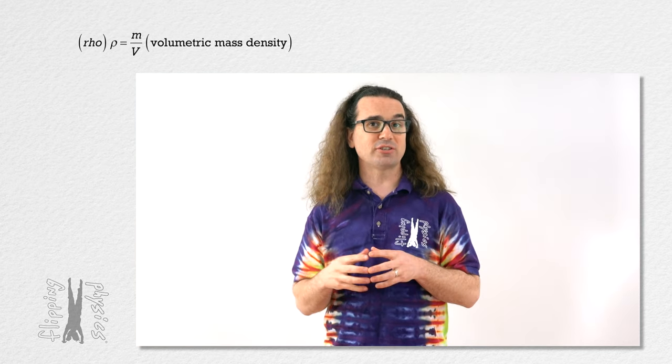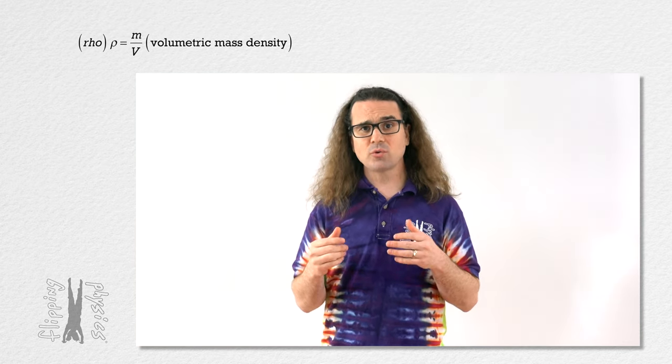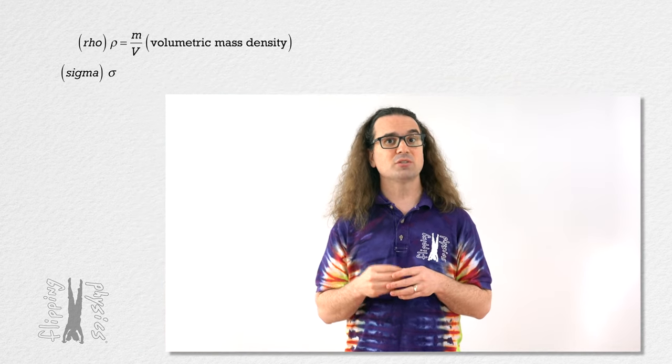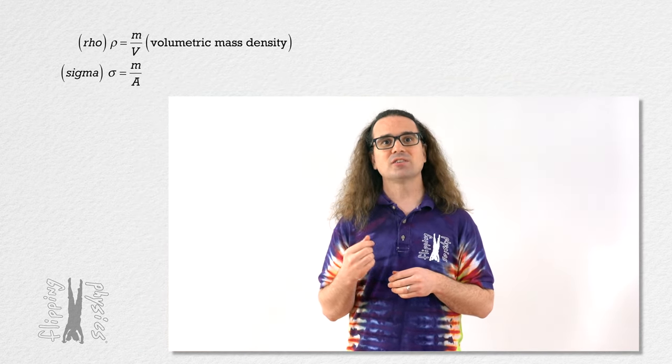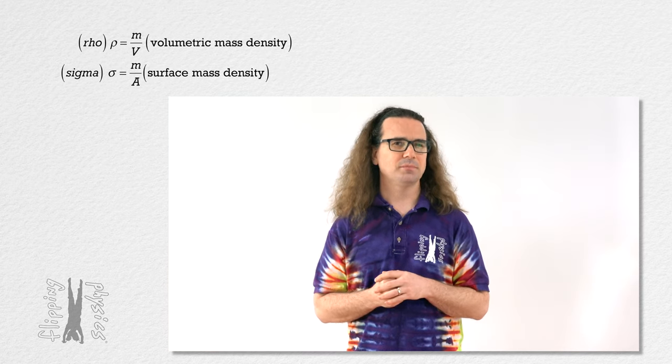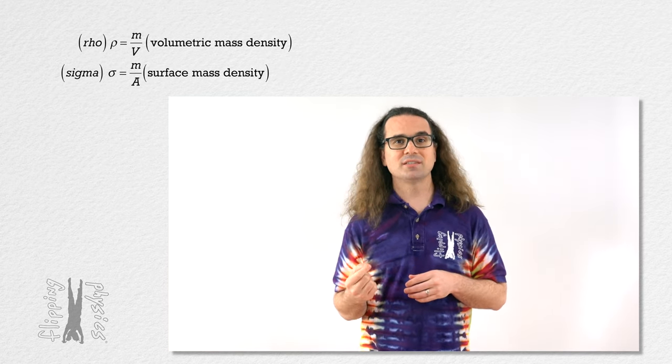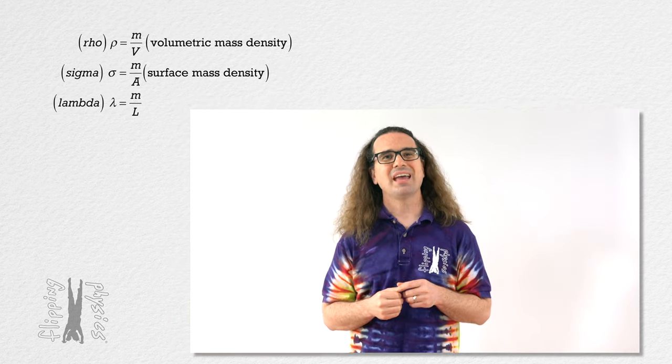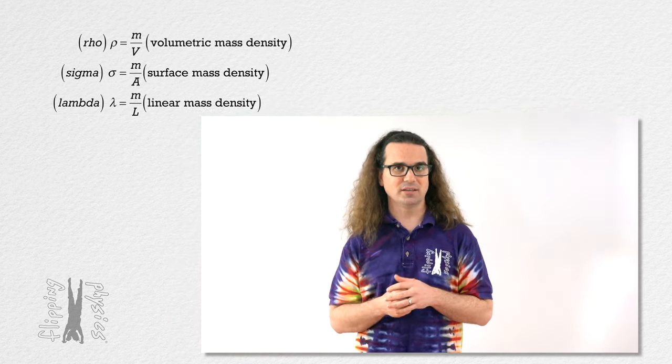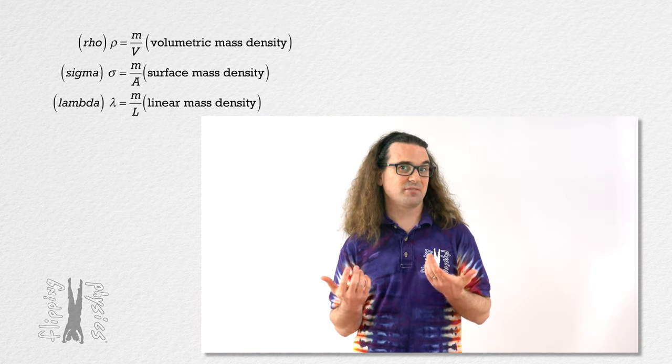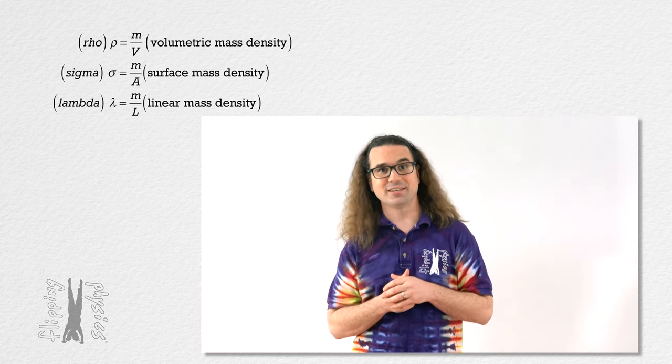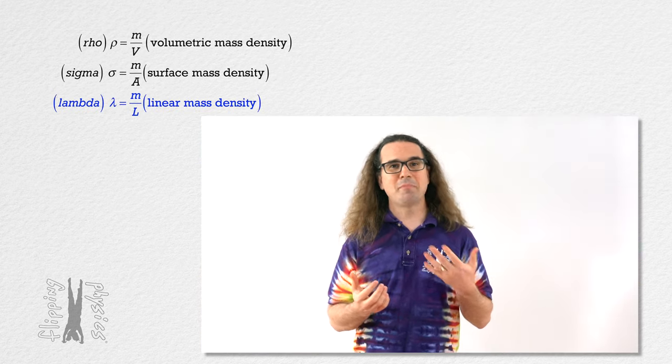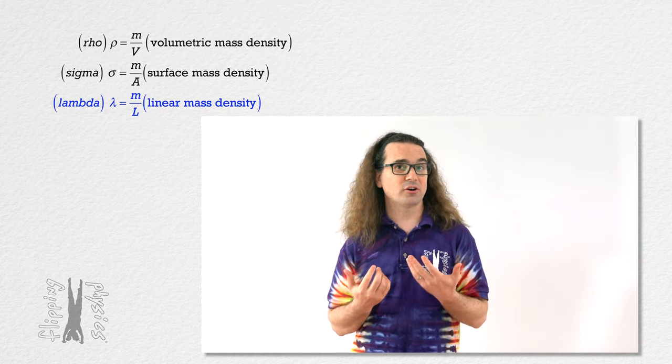In addition to volumetric mass density, there is also a mass density that uses the lowercase Greek letter sigma, which equals mass divided by area and is called surface mass density. There is also a mass density that uses the lowercase Greek letter lambda, which equals mass divided by length and is linear mass density. So yeah, lots of different types of mass densities. Today we are going to do an example which uses linear mass density.